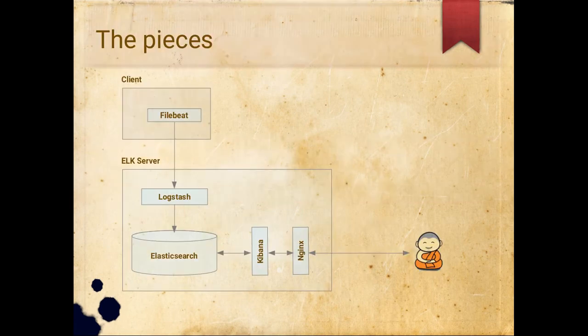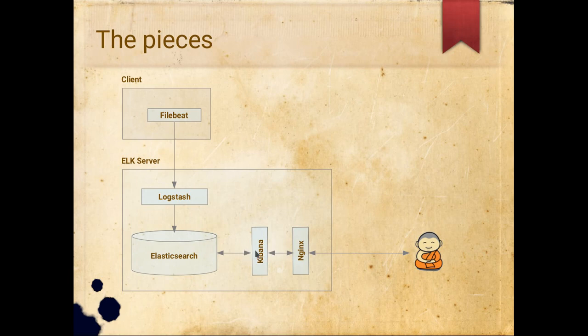The ELK stack architecture: we are going to install it on a server, a CentOS 7 virtual machine. The main components are Logstash, Elasticsearch, and Kibana. Logstash is the component that receives the logs, processes them, and then stores the logs in Elasticsearch. Elasticsearch is just a storage engine, and Kibana is a place where you visualize the logs, create dashboards, reports, and so on.